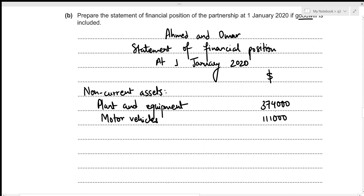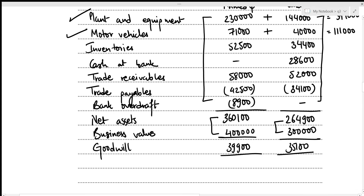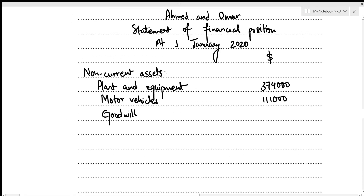Goodwill is also a non-current asset. Total goodwill: $39,900 + $35,100 = $75,000. Total non-current assets: $374,000 + $111,000 + $75,000 = $560,000.